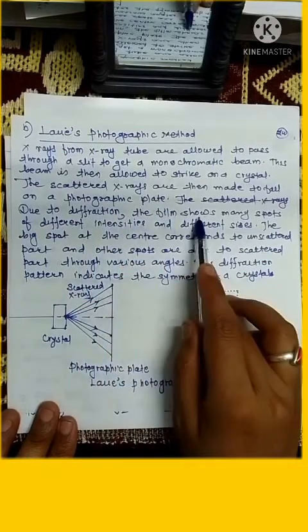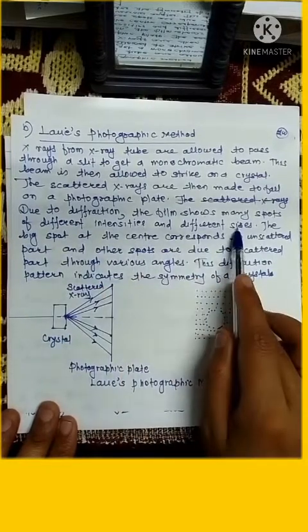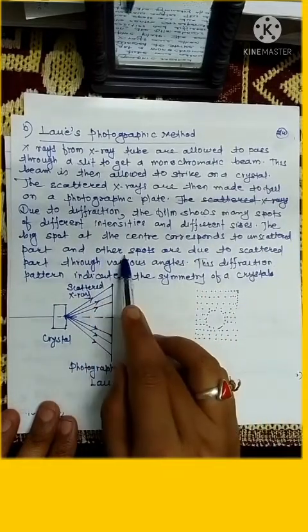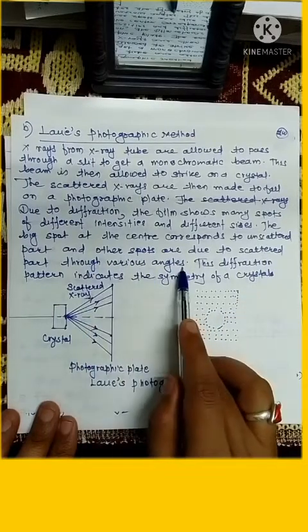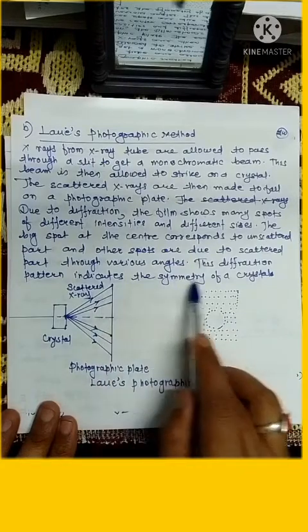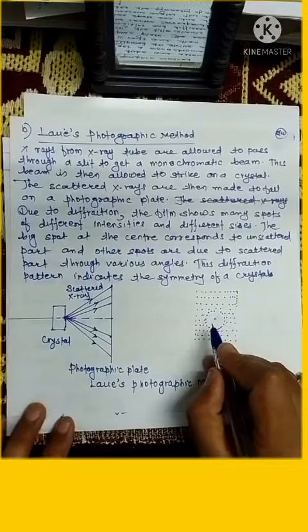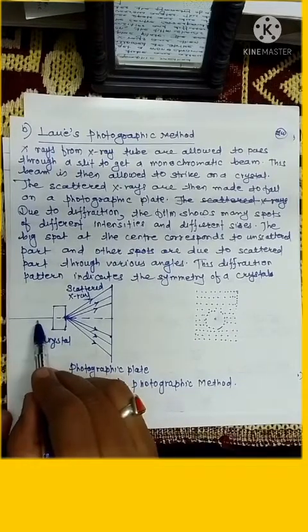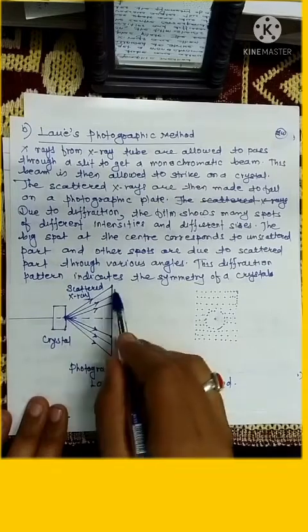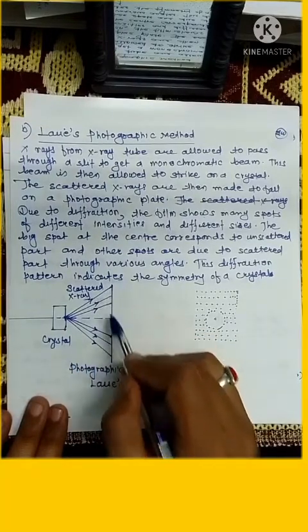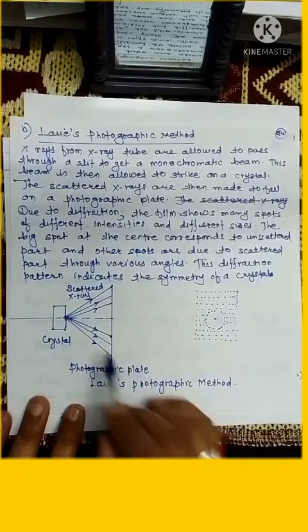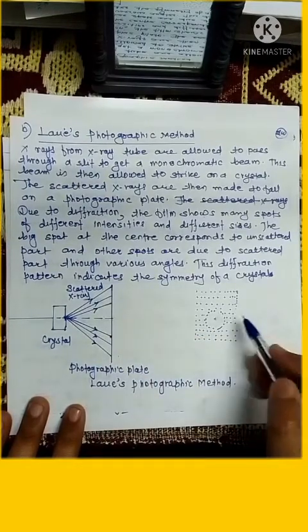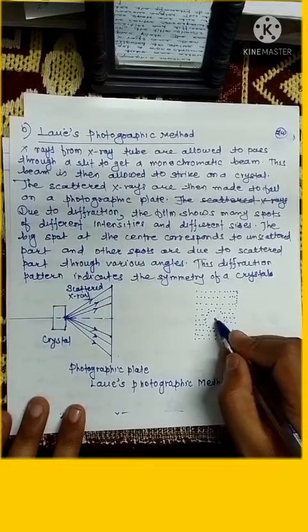Due to the diffraction, the film shows many spots of different intensity and different sizes. The big spot at the center corresponds to unscattered part and other spots are due to the scattered part through various angles. This diffraction pattern indicates the symmetry of crystal. Now just see, this is the crystal and X-ray falls and then this X-ray is scattered and scattered X-ray falls on photographic plate. What is the picture obtained on photographic plate? It is shown here in this picture. In this picture we see that at the center there is a dot.